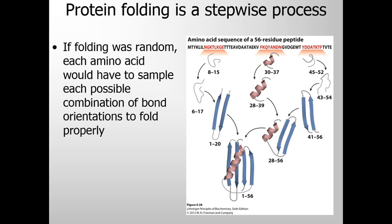The larger question is: how does a polypeptide chain arrive at its native conformation? Let us assume that in a polypeptide containing 100 amino acids, each amino acid residue could take up 10 different conformations on average. So the number of conformations would be 10 to the power of 100.